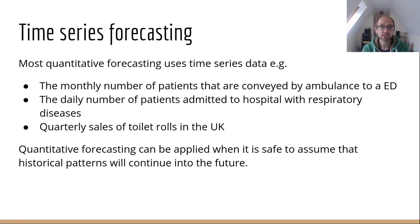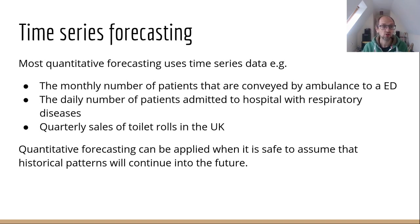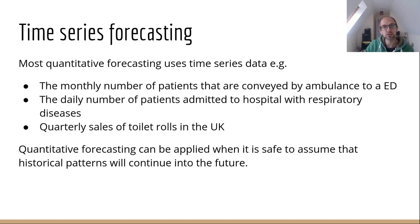This course will be focusing on quantitative time series forecasting. Examples include the monthly number of patients conveyed by ambulance to an emergency department, the daily number of patients admitted to hospital with respiratory conditions, or the quarterly sales of toilet rolls in the UK. We can apply this type of forecasting where it's safe to assume that historical patterns will continue into the future — though that's not always the case, and time series forecasting over the next few years will be complicated by the significant disruption around March 2020.